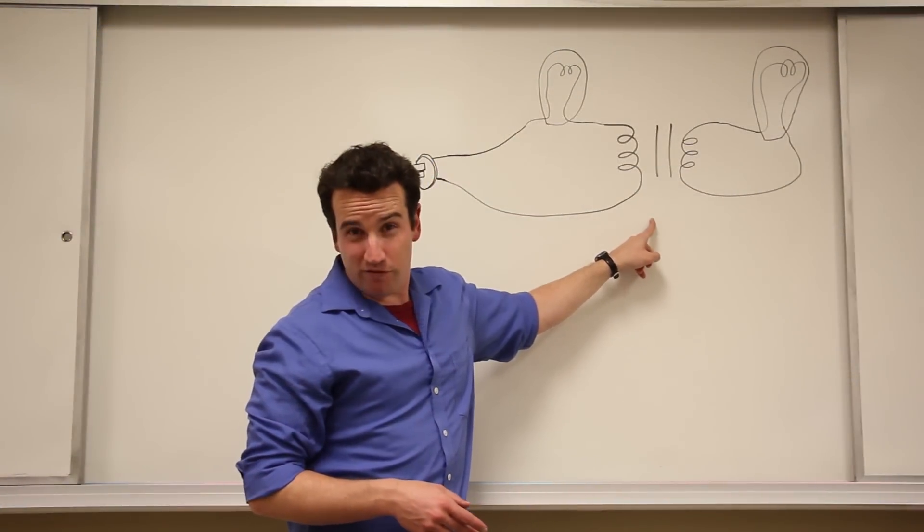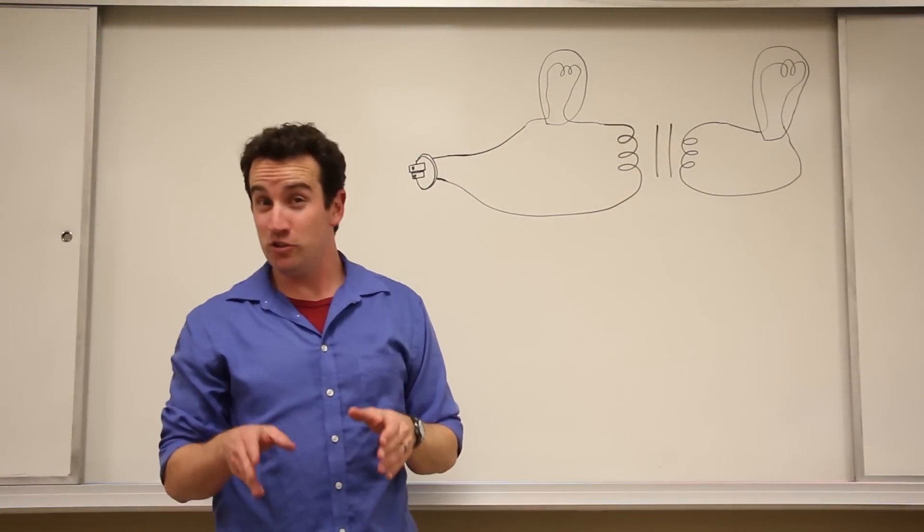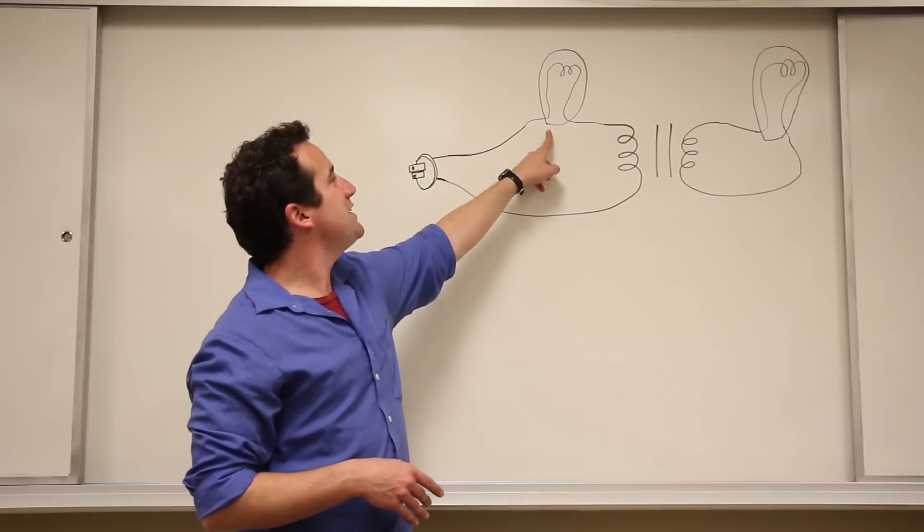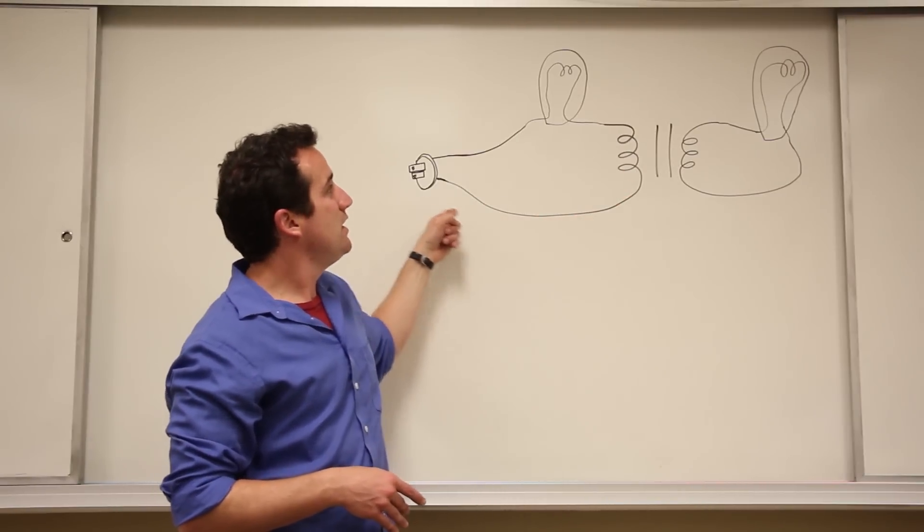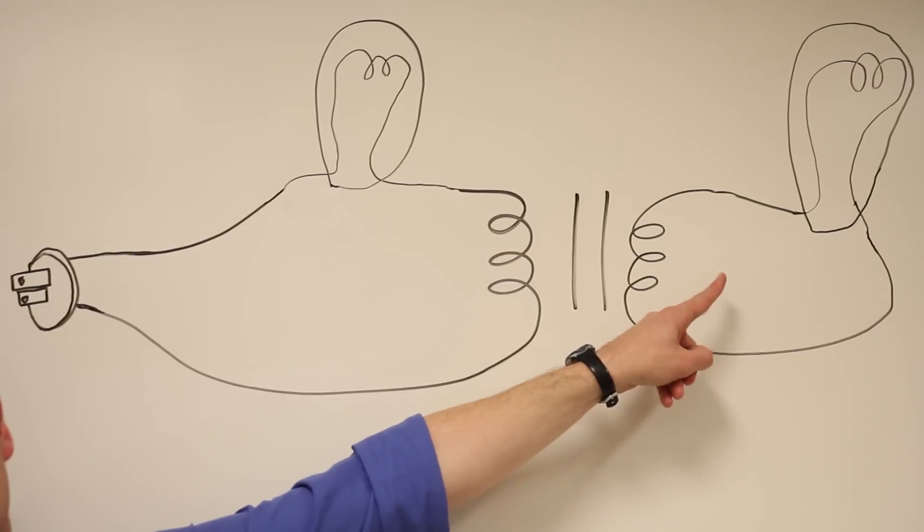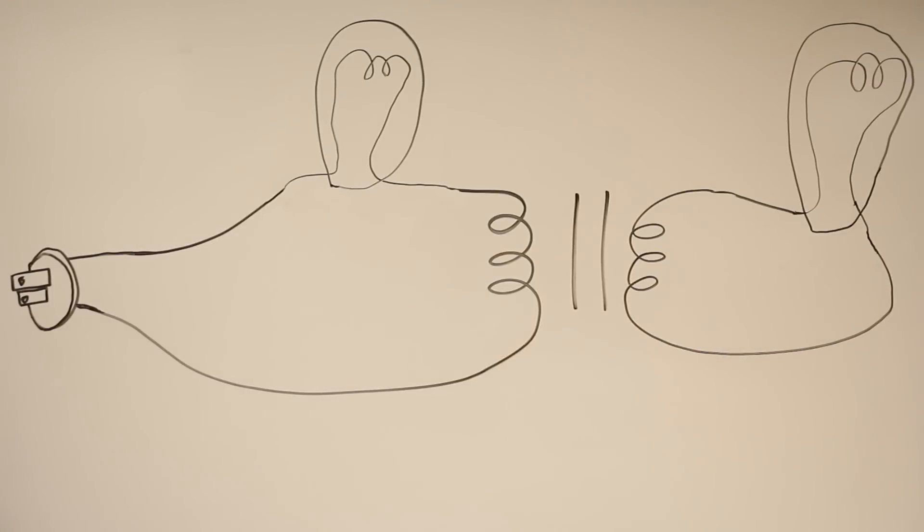This is the symbol for a transformer, but here it's connected in an unusual way. There's a light bulb in series with the primary coil, which is connected to the power source, but also another light bulb connected to the secondary coil, which is powering it also.